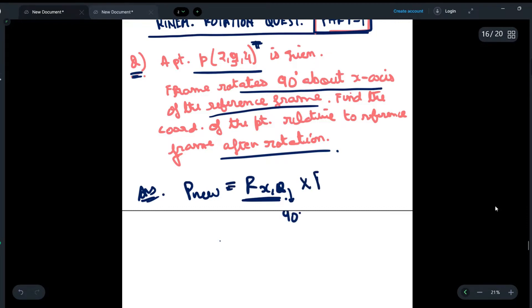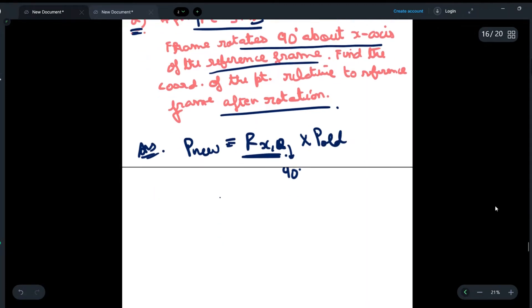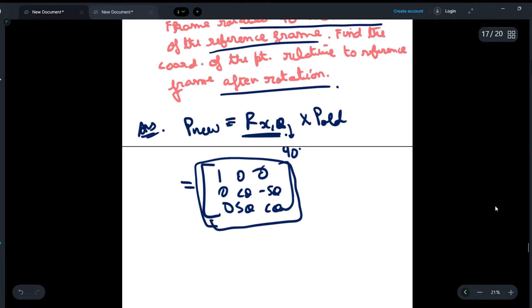Now we will write the standard rotational matrix for x-axis: [1, 0, 0; 0, cos theta, -sin theta; 0, sin theta, cos theta]. This is the standard matrix for rotation about the x-axis. If you want me to explain how we got this matrix, just write in the comment section, and similarly I can explain the rotational matrices for y and z axes as well.